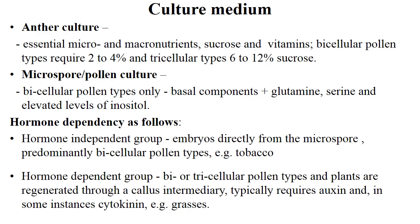The culture medium requirement for anther culture includes essential micro and macronutrients and sucrose and vitamins. Bicellular pollen types require 2–4% sucrose and tricellular types 6–12% sucrose. For microspore or pollen culture, bicellular pollen types require basal components plus glutamine, serine and elevated level of inositol.